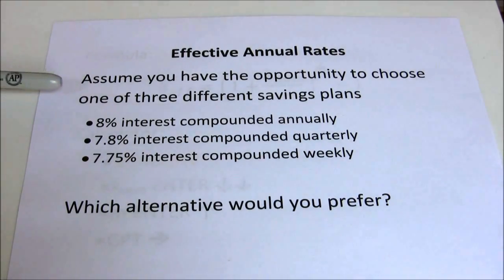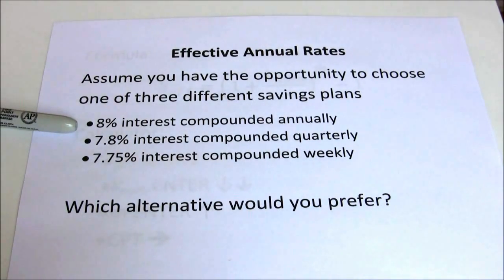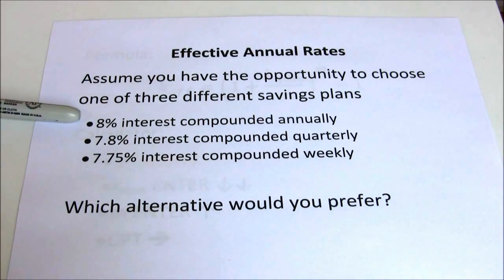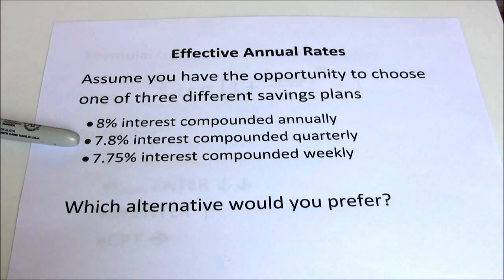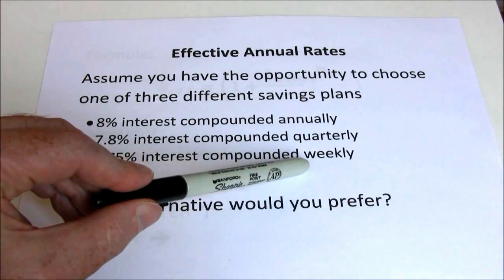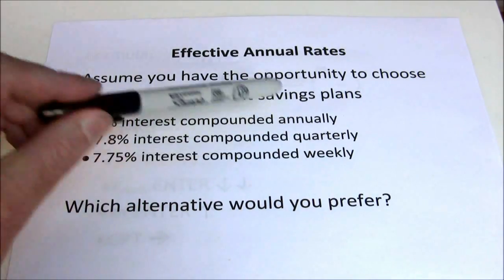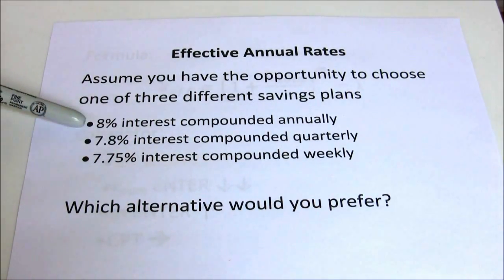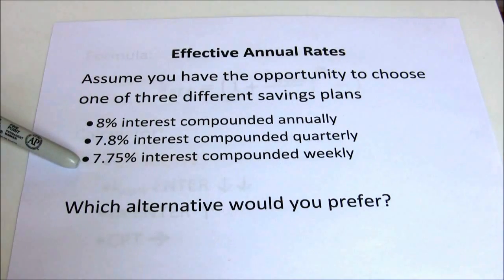Sometimes our investment opportunities are going to offer us different compounding periods. For example, here we have three different savings plans: 8% interest compounded annually, 7.8% interest compounded quarterly, or 7.75% interest compounded weekly. Now, we know that the more frequently we compound our money, the faster it can grow. So weekly is better than annual compounding. However, we also know 8% is better than 7.75%. How do we decide which is better off?